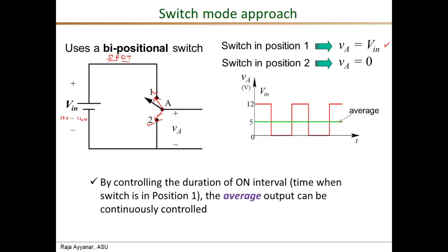Illustrating further: if the input goes to a higher value of 14 volts, the VA waveform reaches 14 volts during position one, but to maintain the same average of 5 volts, we make the on interval shorter than in the 12-volt case. Similarly, if the input voltage drops to 10 volts, the on-interval voltage is just 10 volts, but the duration of the on interval is now longer than in the other two cases, so that the average is again 5 volts. That is the key concept.